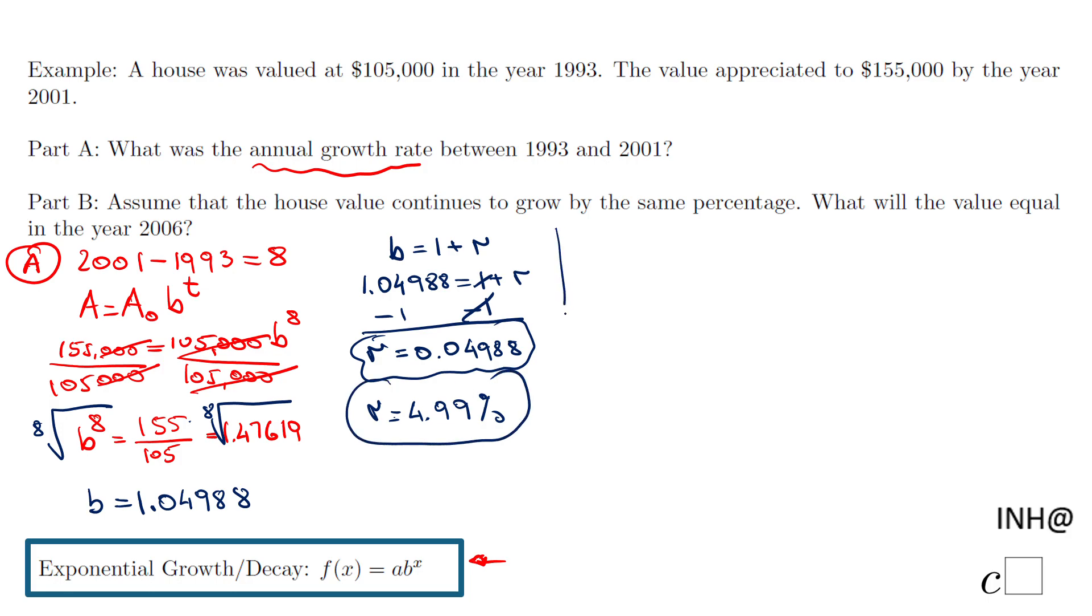That's Part A. Let's move to Part B. In Part B, the growth rate is the same percentage, and we need to find the value of the house in 2006.